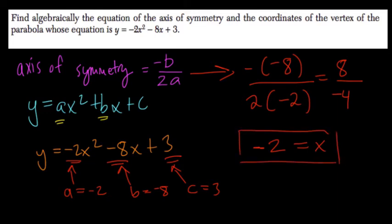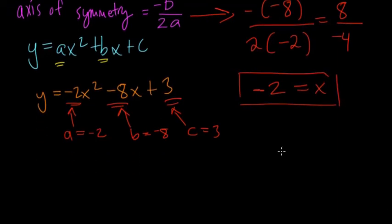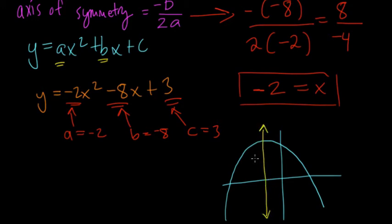This just means if you have your graph, you can almost picture the graph of this parabola, our a term is negative, right? So our axis of symmetry is equal to x equals negative 2. Right here.